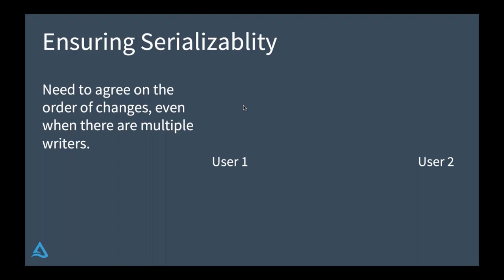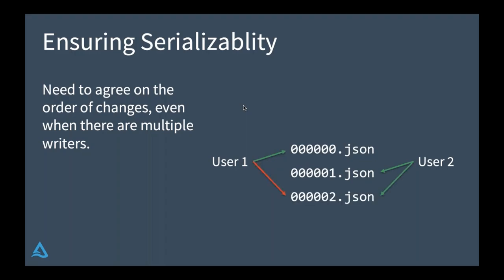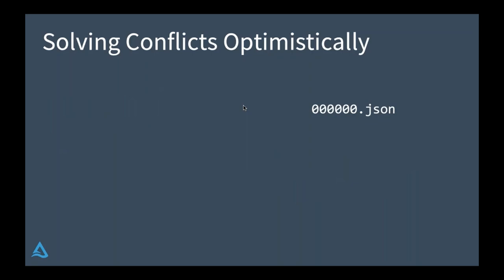We also want serializability — everybody must agree on the order of changes so we can correctly do things like merge-into for change data capture. To agree on changes among multiple writers, we need mutual exclusion: if two people try to create the same version of a Delta table, only one can succeed. We use optimistic concurrency — when you perform an operation, you optimistically assume it will work; if there's a conflict, you check whether it matters to you, and if not, you try again automatically. In most cases, transactions are not overlapping and this is automatically remediated. For example, if two users are streaming into the same table and both try to commit version two, one wins the race; the other checks whether anything changed, finds the schema hasn't changed, and automatically tries again.